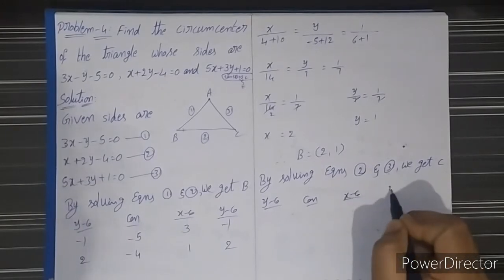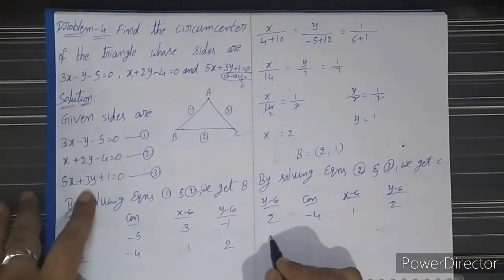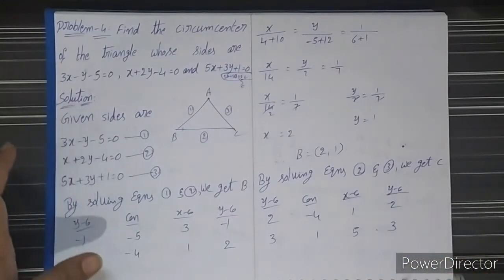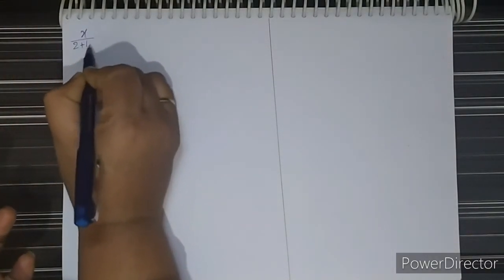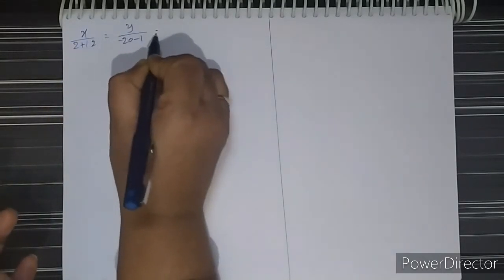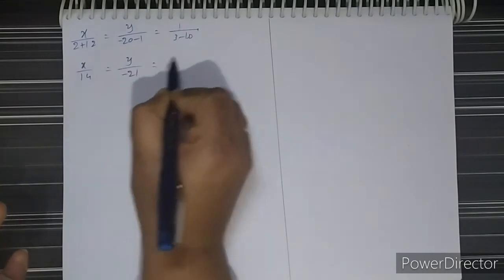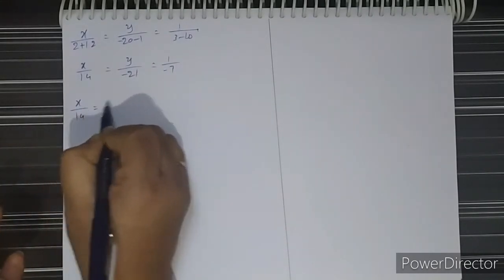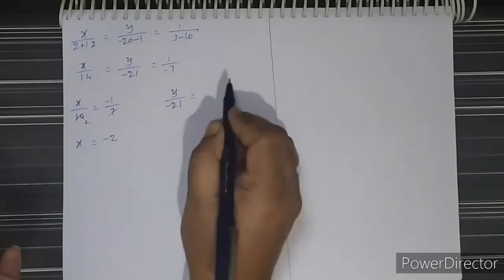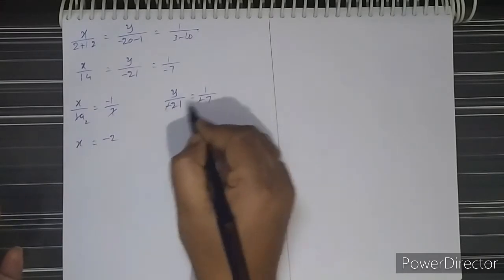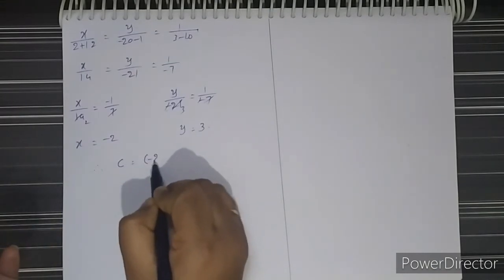Next, by solving equations 2 and 3, we get vertex C, using the same cross multiplication process. The coefficients from equations 2 and 3 give x/(2+12) = y/(−20−1) = 1/(3−10), which simplifies to x/14 = y/−21 = 1/−7. From this, x = −2 and y = 3. Therefore, vertex C = (−2, 3).